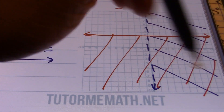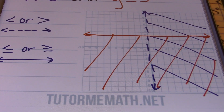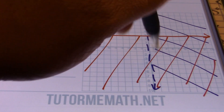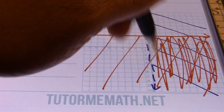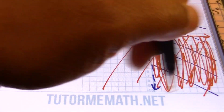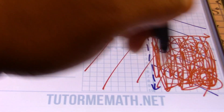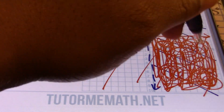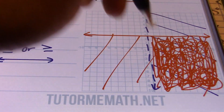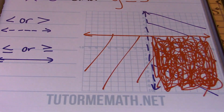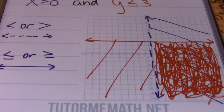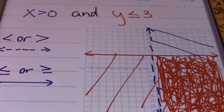We found that the lower right area of the graph is where we have an overlap of our solutions. That's right — right in there is where the solution is. This area is the solution to our example where x is greater than zero and y is less than or equal to three.